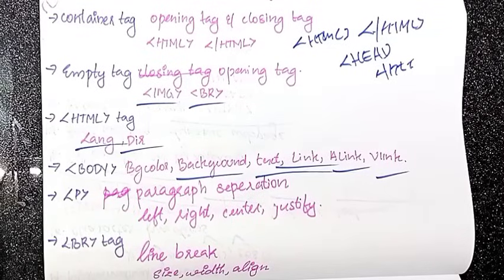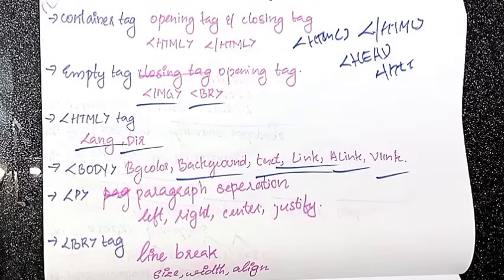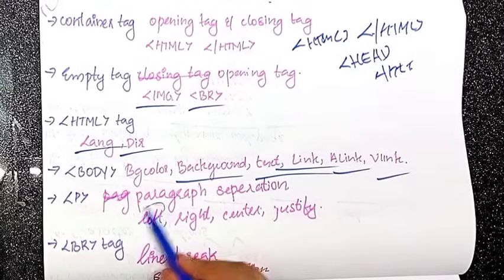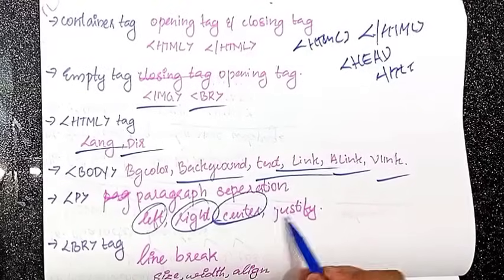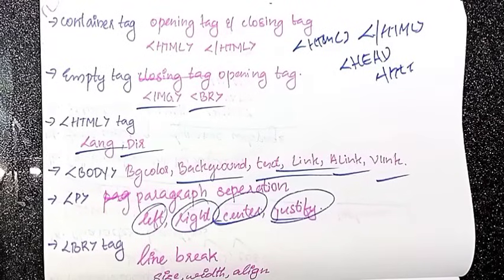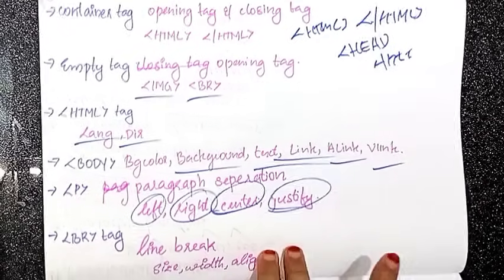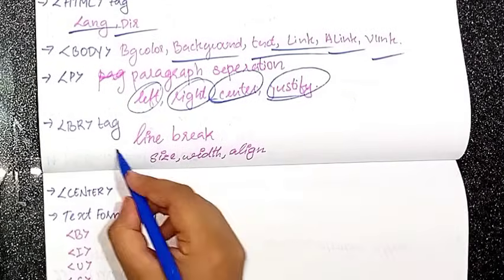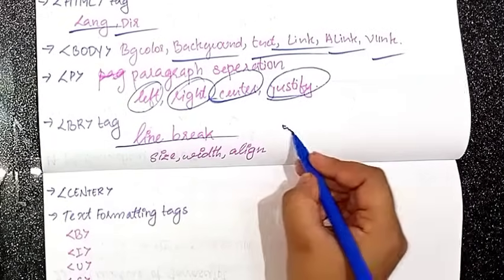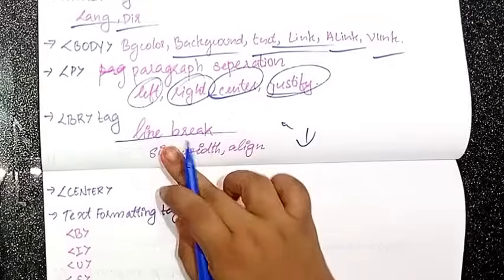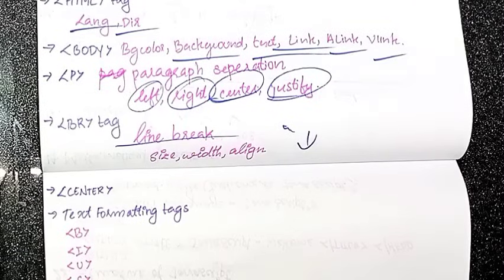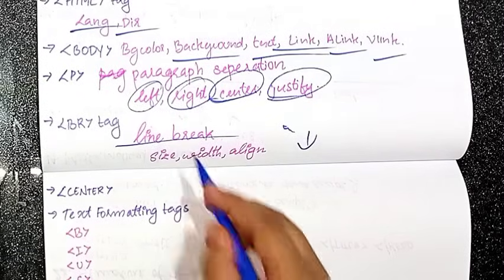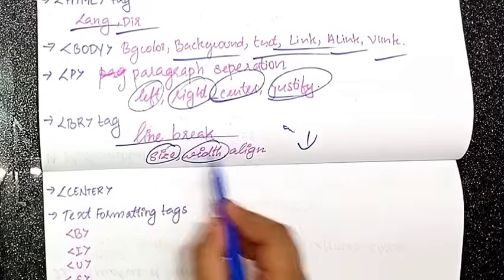For paragraph separation, we use the p tag with the align attribute set to left, right, center, or justify. Then the hr tag is used to draw a horizontal line, and we will use the hr tag with its attributes.